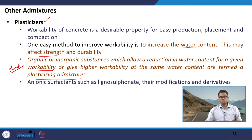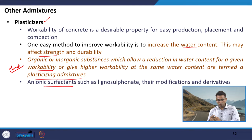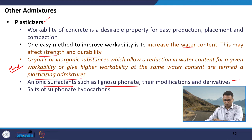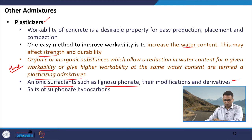Plasticizing admixtures have several groups. Plasticizers are anionic surfactants — surfactant-type materials meant to reduce friction between particles. They can be from lignosulfonate origin, their modifications, and derivatives. They can also be salts of sulfonate hydrocarbons.